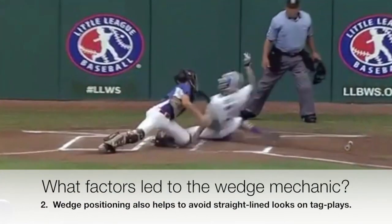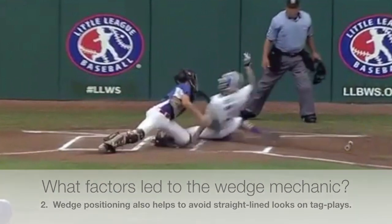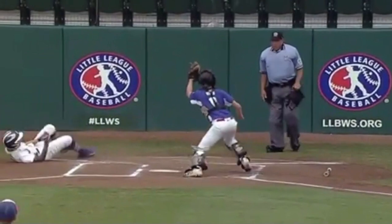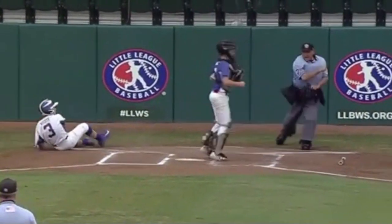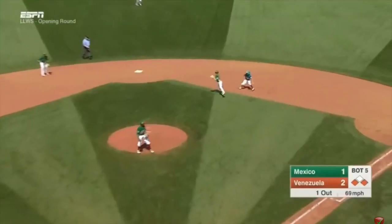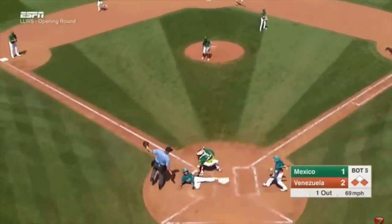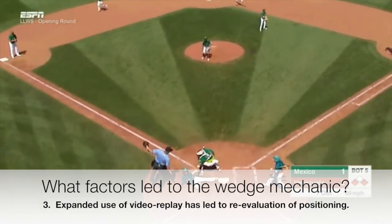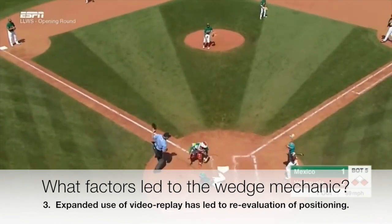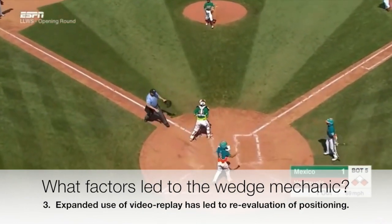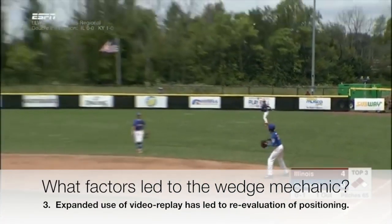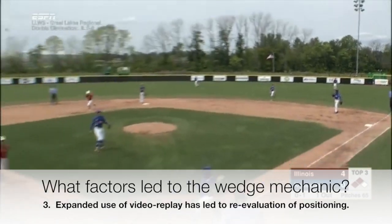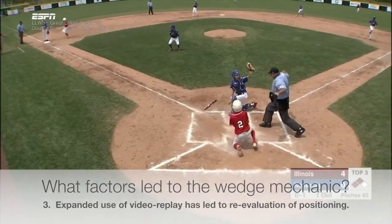The second answer lies in the fact that as more swipe tags were attempted, umpires were now getting straight-lined more frequently. Third, the expanded role of video replay in all levels of baseball have led to a re-evaluation of the philosophies dictating positioning for tag plays, and therefore, wedge positioning simply adapts our mechanics to the evolving nature of the game.